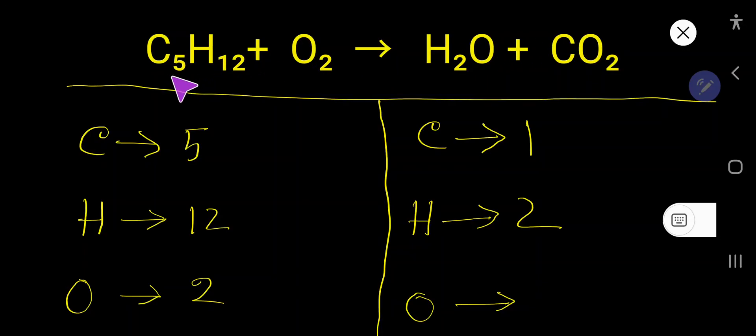How to balance C5H12 plus O2 that produces H2O plus CO2. On the right hand side, the number of hydrogen is 2, the number of oxygen here 1.